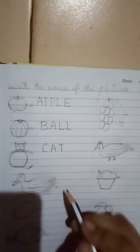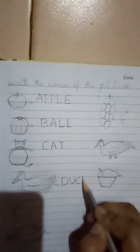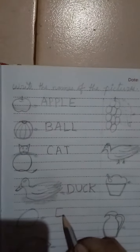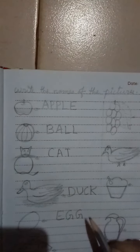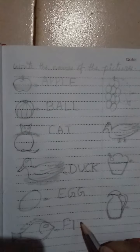Duck: D, U, C, K. Duck. Egg: E, G, G. Egg. Fish: F, I, S, H. Fish.